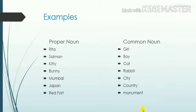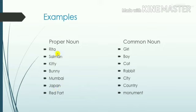Examples of proper noun and common noun. Here, this is the example of proper noun, and here, this is the example of common noun. In proper noun, the particular name of the girl, boy, cat, animal, city, country, and monument is given. And in common noun, generally girl, boy, cat, rabbit, city, country — these are given.